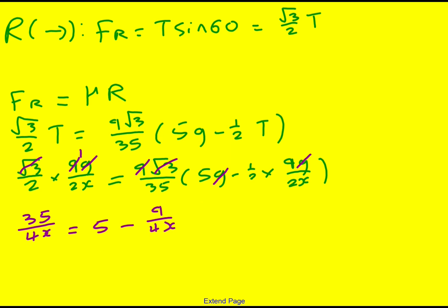35 over 4X is going to equal 5 minus 9 over 4X. I could multiply through by the X. But do you know what? It's going okay. So I'm going to add 9 over 4X onto both sides. I think I actually, yeah, I didn't quite do it like this when I did it myself originally. But I'm going to stick with it. So I've got 44 over 4X. No, that's not right. Yeah, that is right. 44 over 4X is equal to 5, which means 11 over X is equal to 5.